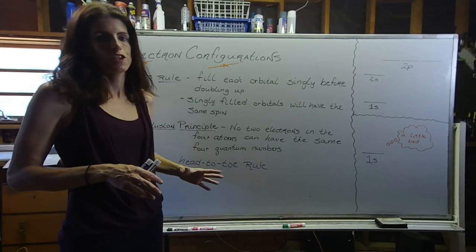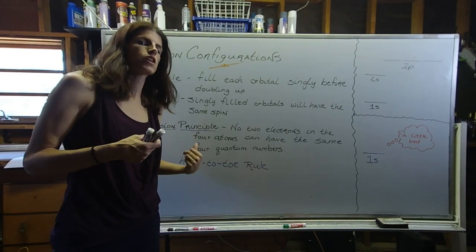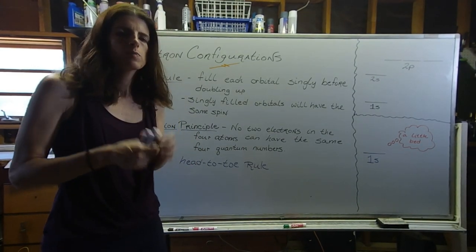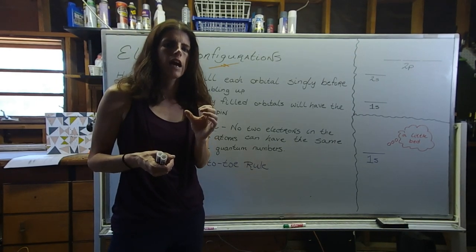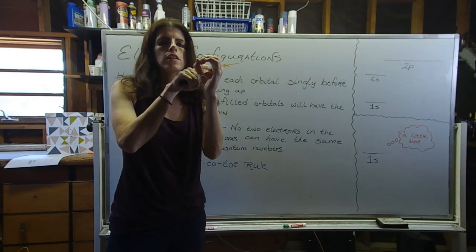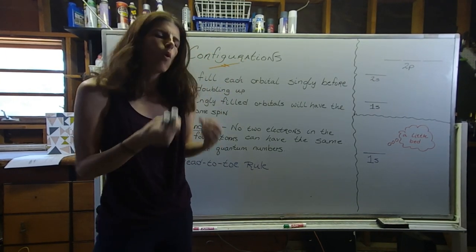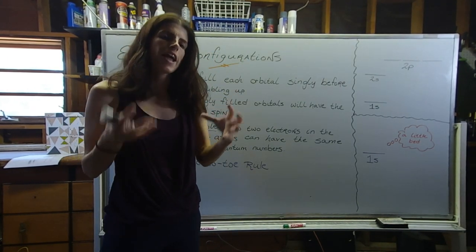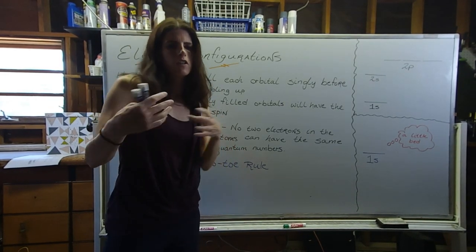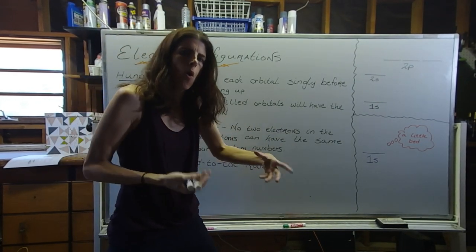So, electron configurations. The first concept you need to be aware of as we start our discussion is the idea of an orbital. We spoke briefly in the beginning of the course about the electron cloud. In the center of the atom you have the nucleus where the protons and neutrons reside, and around that is the electron cloud. An orbital is a specific area of the electron cloud where we expect to find our electrons. At the end of the day, an orbital holds electrons.